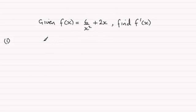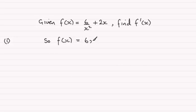In order to do this, I'm going to change f of x to a different form. This first term, 6 over x squared, we can think of as 6 times 1 over x squared, and 1 over x squared is the same as x to the power minus 2. So that gets that term into the right form. The other term, 2x, I'm just going to leave that because that's okay.